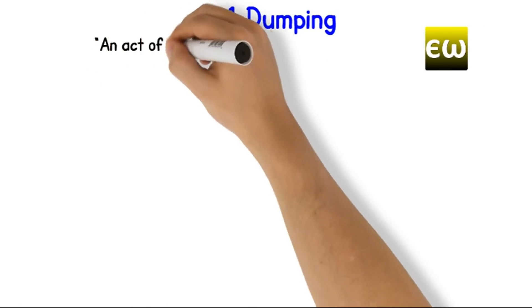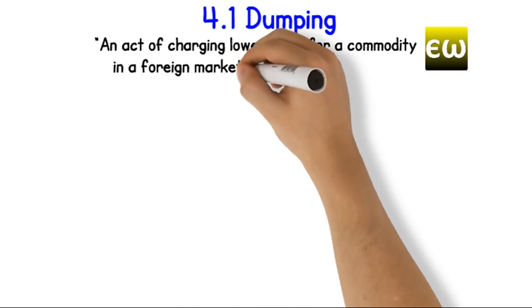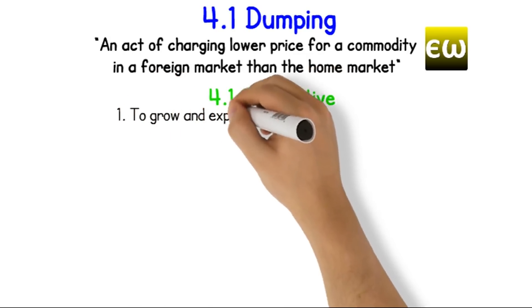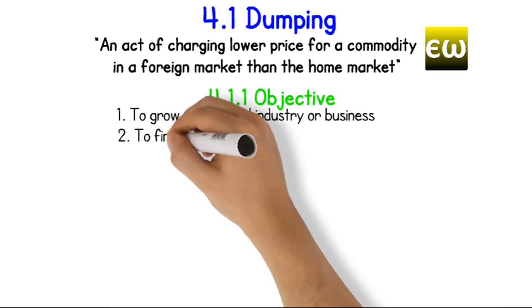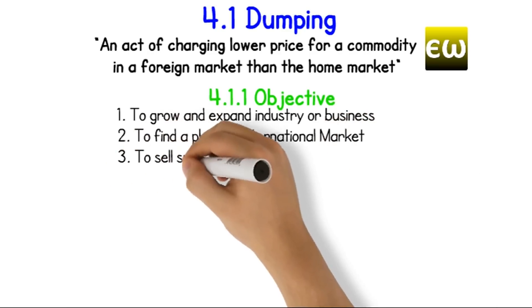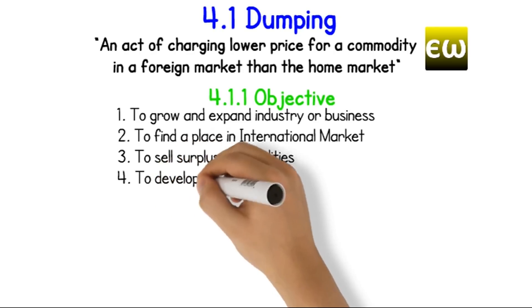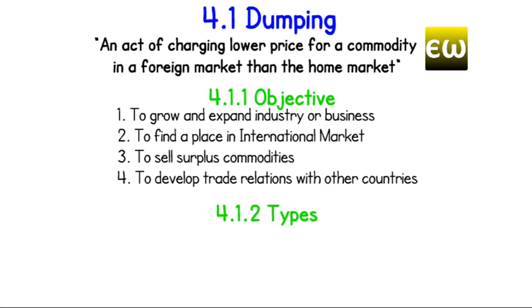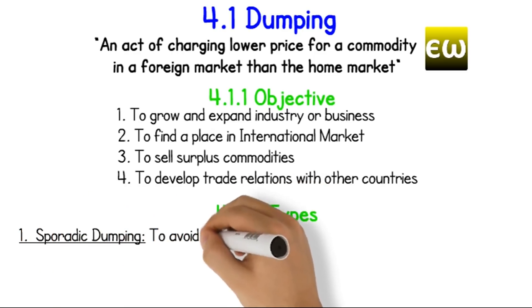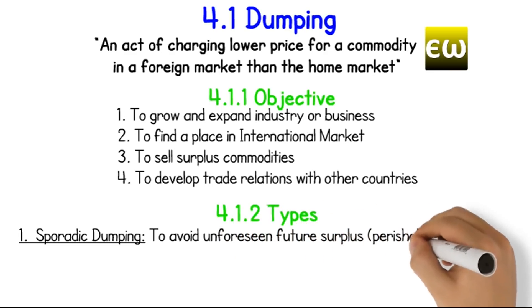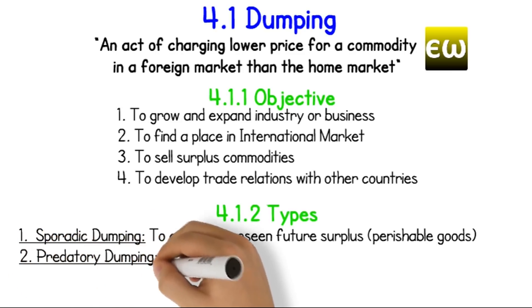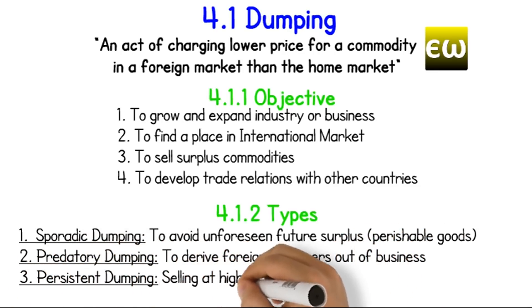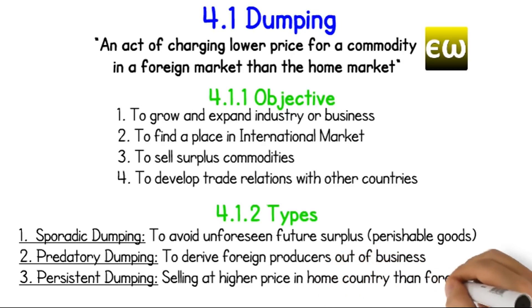Dumping is an act of charging a lower price for a commodity in a foreign market than in the home market. Objectives: 1. To grow and expand industry or business. 2. To find a place in the international market. 3. To sell surplus commodities. 4. To develop trade relations with other countries. Types of dumping: 1. Sporadic dumping — to avoid unforeseen future surplus, e.g. perishable goods. 2. Predatory dumping — to drive foreign producers out of business. 3. Persistent dumping — selling at a higher price in the home country than in the foreign country.